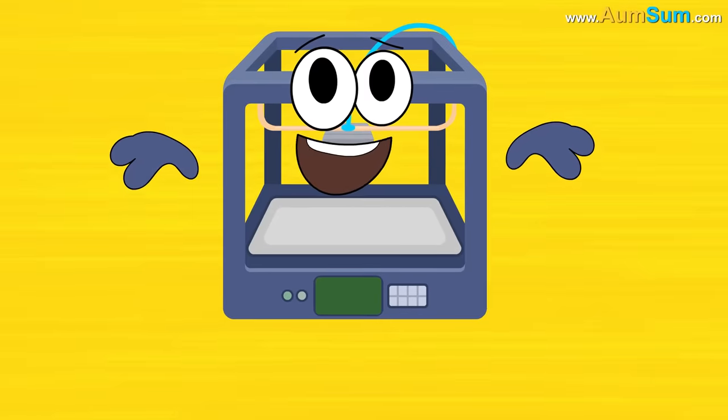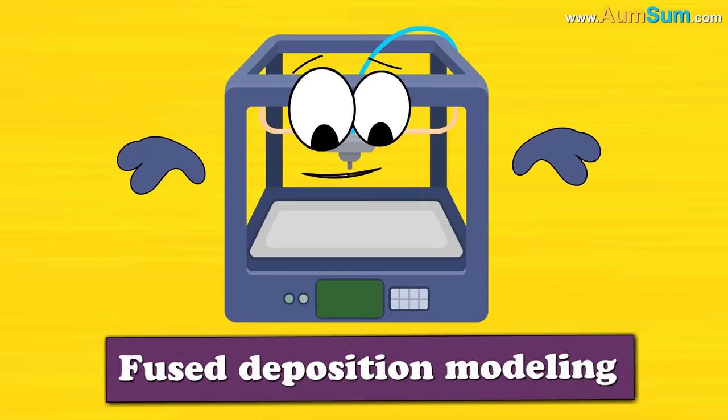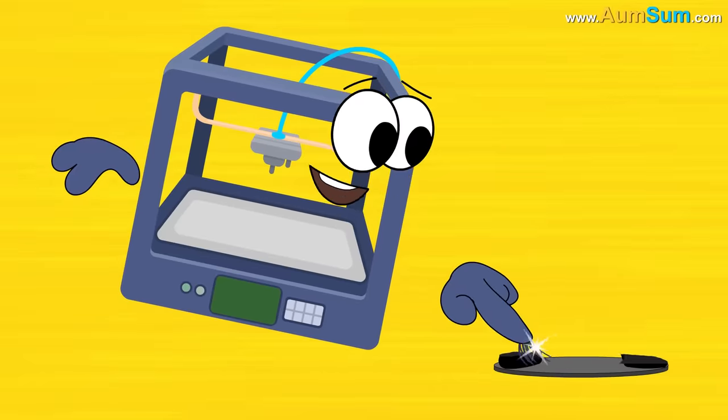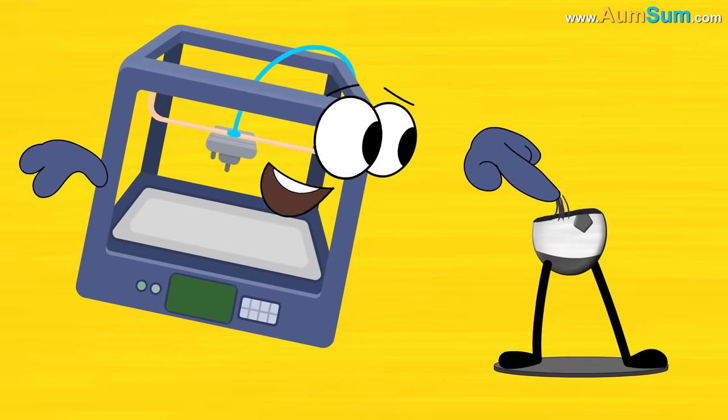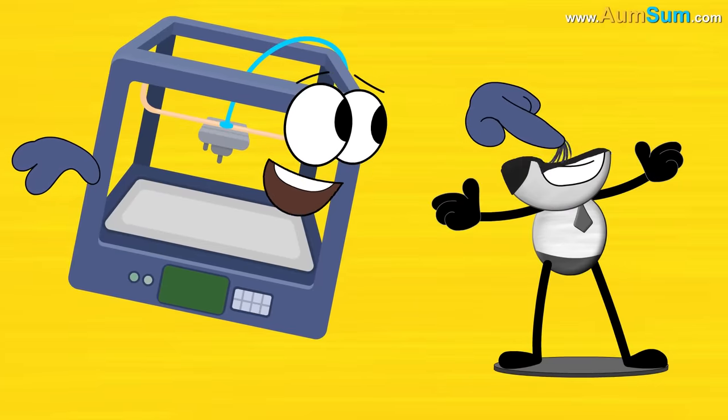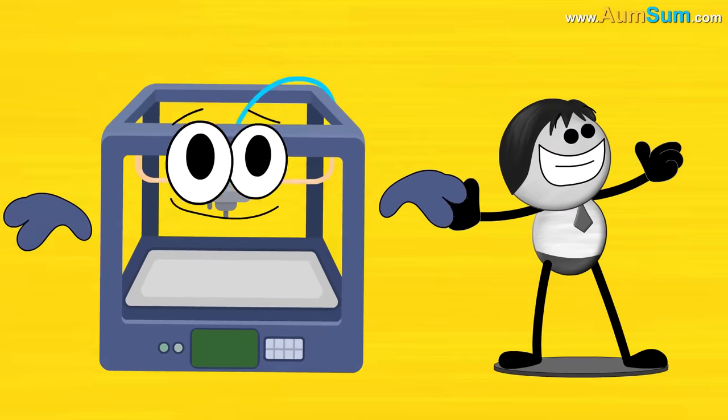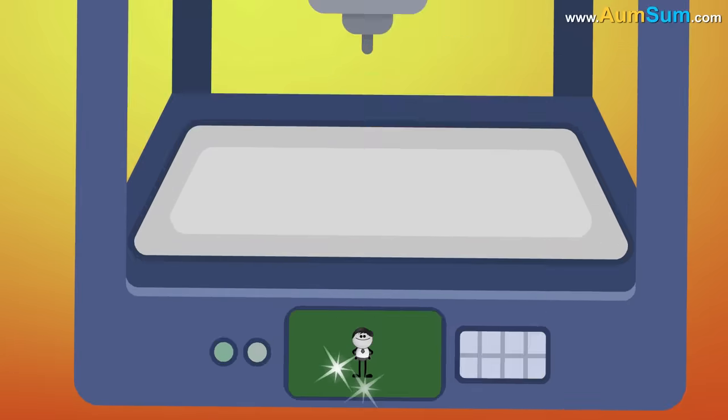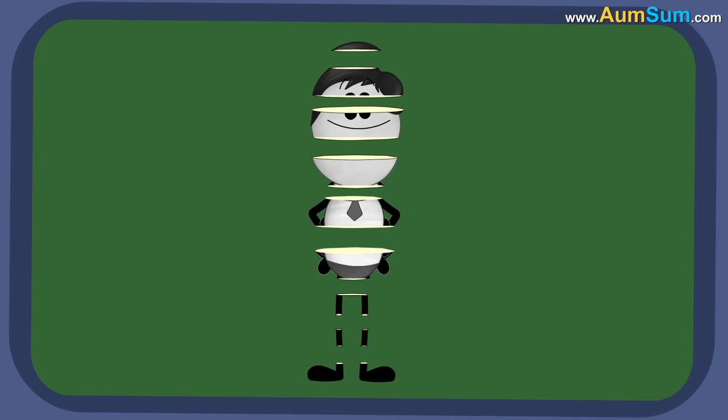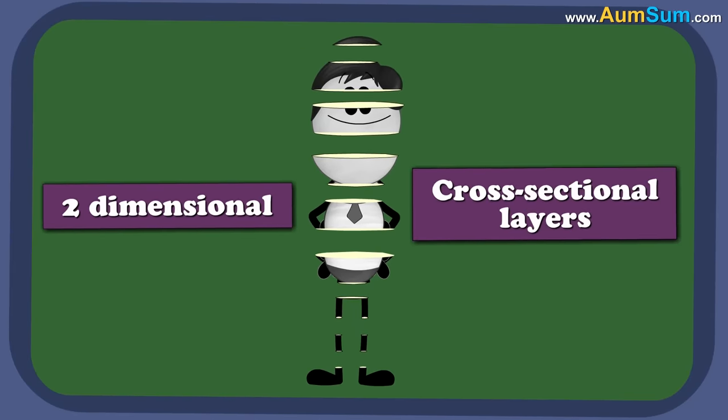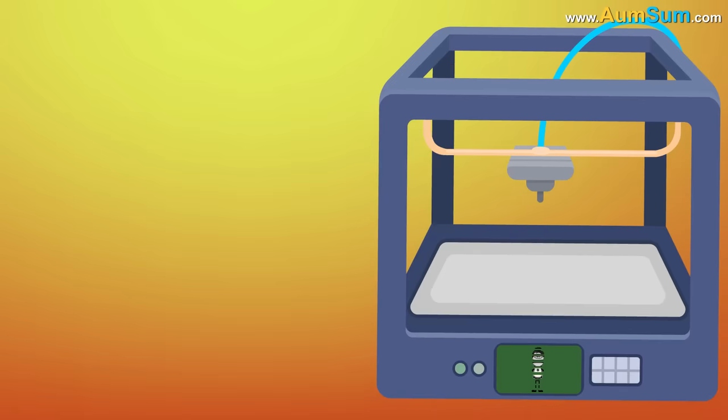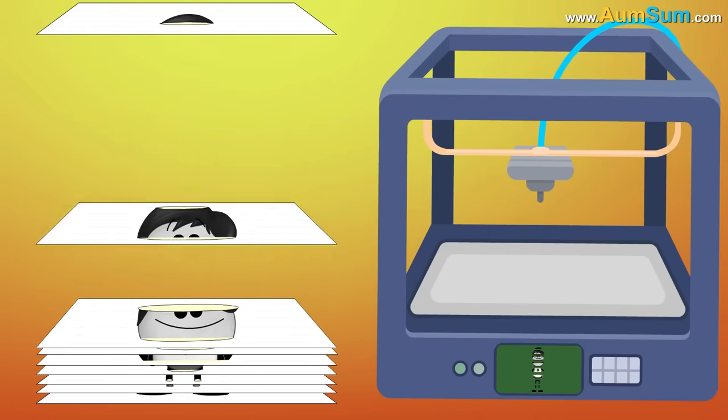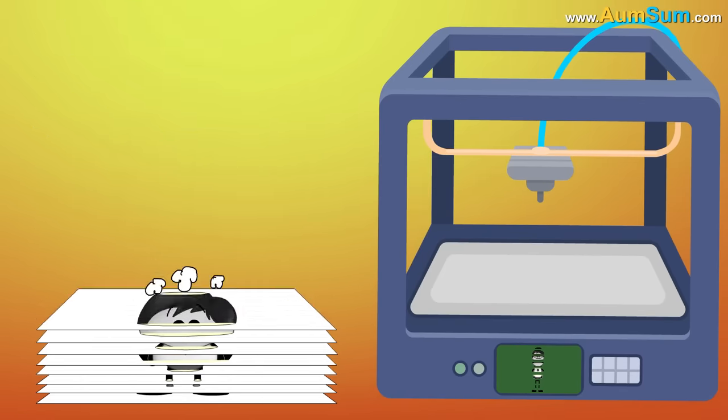A 3D printer uses a method called fused deposition modeling. In this method, a 3D model is printed from the bottom up, one layer at a time, by repeatedly printing over the same area. First, a 3D CAD drawing is fed to the printer. The 3D printer divides the 3D drawing into two dimensional cross-sectional layers. These layers are basically like separate 2D prints which sit on the top of one another. The only difference is that there is no paper in between.